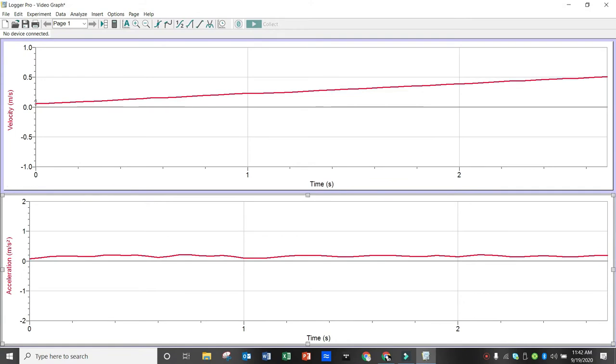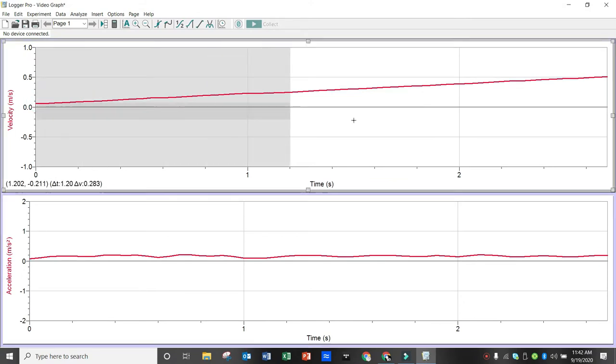So as you can see, the cart was moving on the track from left to right. The origin was on the left, and we have the velocity time graph and the acceleration time graph.